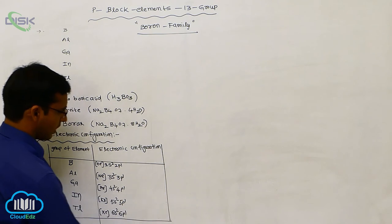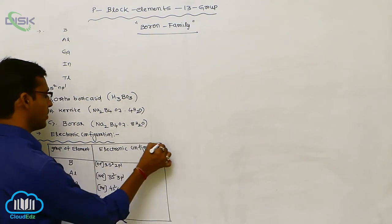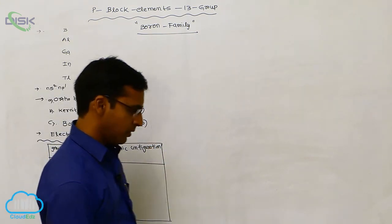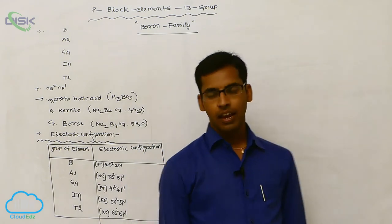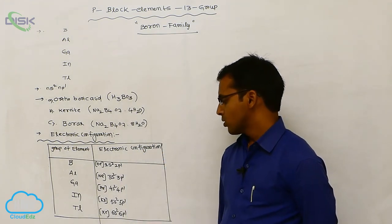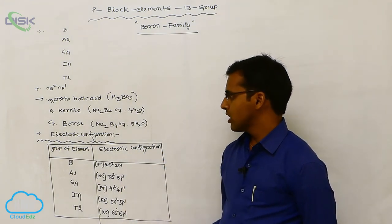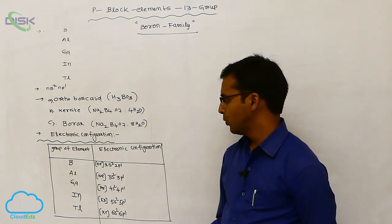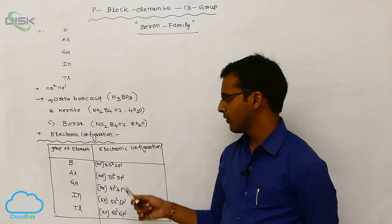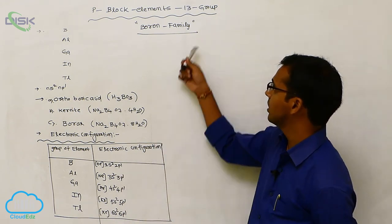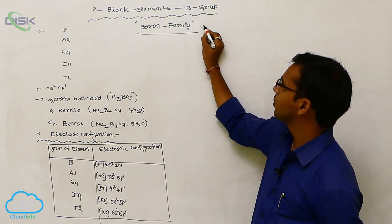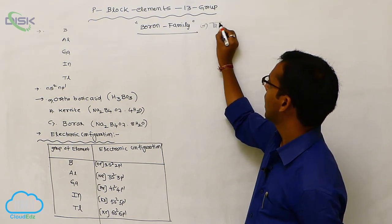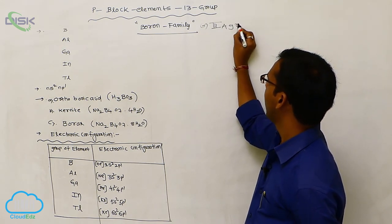This is the nearest inert gas configuration pattern. For all elements—boron, aluminum, gallium, indium, and thallium—the outermost shell contains a maximum of only three electrons. The S orbital contains two electrons and the P orbital contains one electron. Two plus one equals three. That is why it is called the 13A group elements.